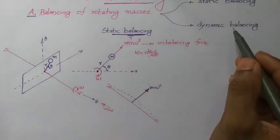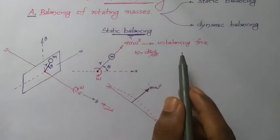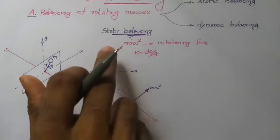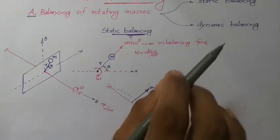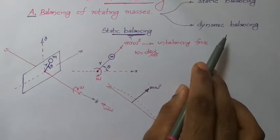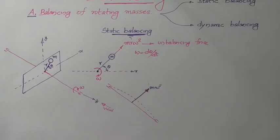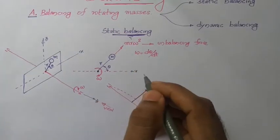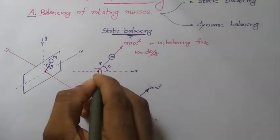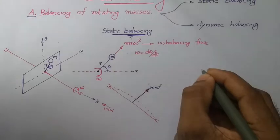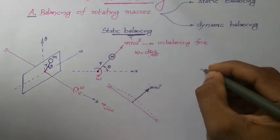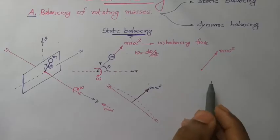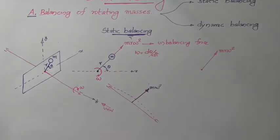There can also be unbalanced couples, which will be discussed in dynamic balancing. The process of removing both unbalancing forces and unbalancing couples is known as balancing. In static balancing you will be removing only unbalanced forces; in dynamic balancing you will be removing both unbalancing forces and couples. To remove this unbalanced force, if you draw the force polygon for the shaft, you have the unbalanced force vector M·R·omega² acting in one direction.